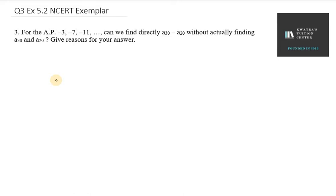Hello everyone, let's start with question number 3 of exercise 5.2. So it says for the AP minus 3, minus 7, minus 11, can we find directly the value of A30 minus A20 without actually finding A30 and A20?